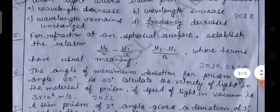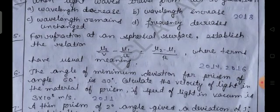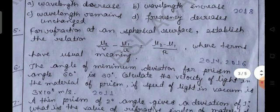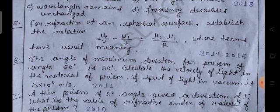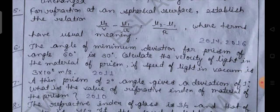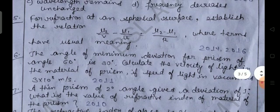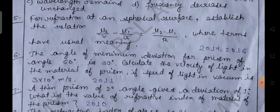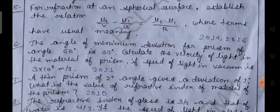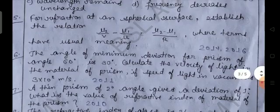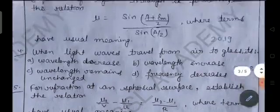Next: For refraction at a spherical surface, establish the relation μ2/v - μ1/u = (μ2-μ1)/r, where terms have their usual meaning. You know very well what is v, u, and r. v is the image distance, u is the object distance, r is the radius of curvature, and μ1, μ2 are the refractive indices of mediums. This is also a most important problem, so this derivation is most important as these two.